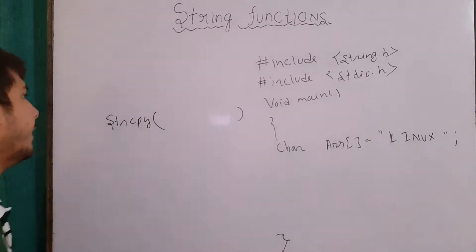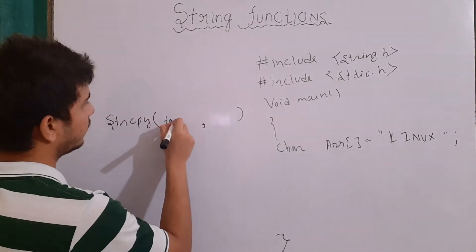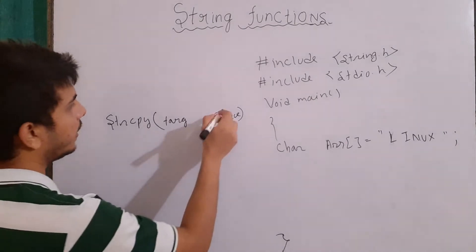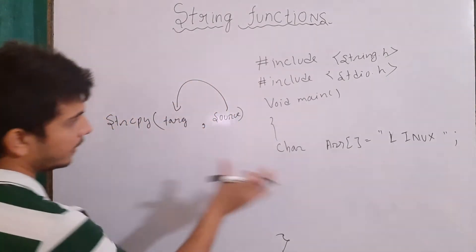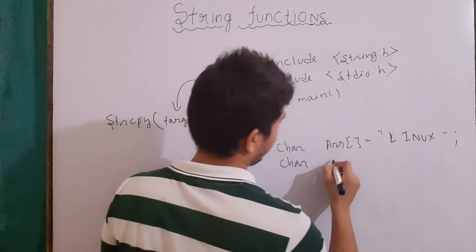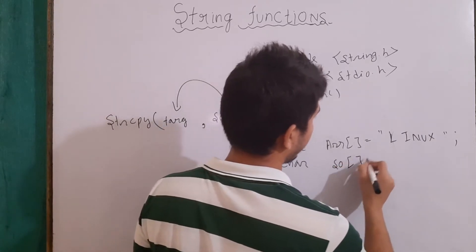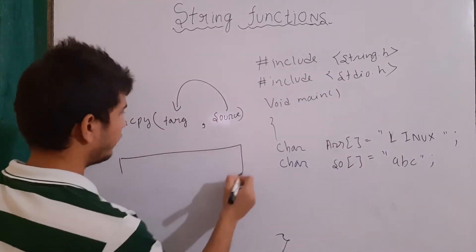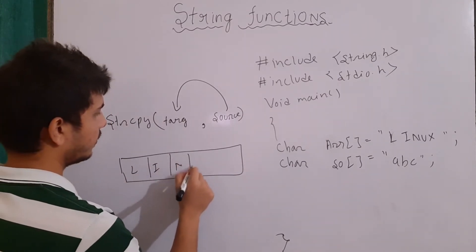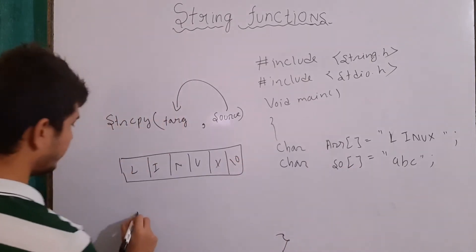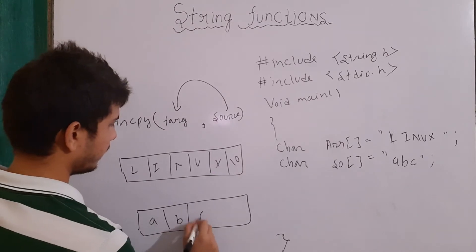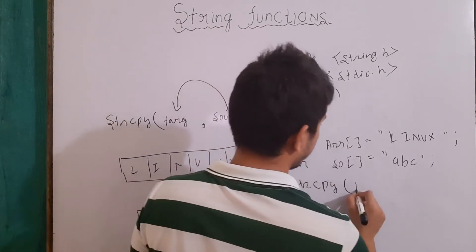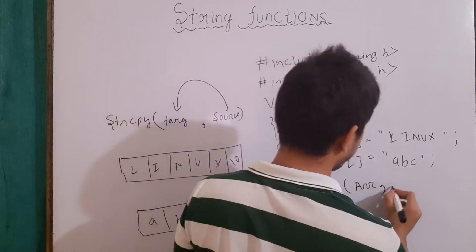Next we have strcpy, which is string copy. It takes two strings as input — let's say target and source. Whatever is present in our source array or source string will be copied into the target string. Now let's say there is another array named "so" with content "abc". When we define array ARR it will contain "linux\0" and "so" will contain "abc\0".